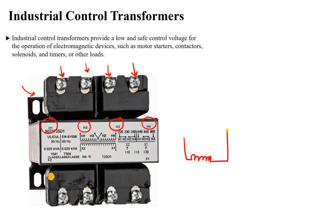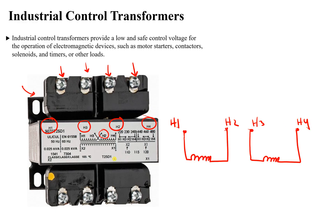The first coil has terminals H1 and H2. Then we have a second coil inside with terminals H3 and H4. On the secondary side of the transformer you can see terminals X2 and X1.